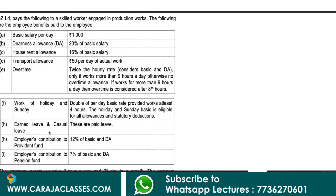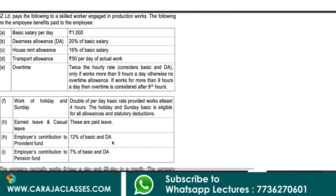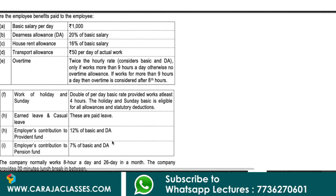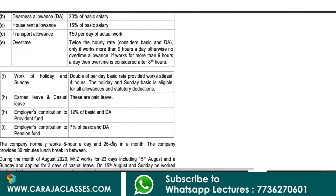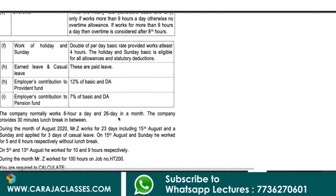Earned leave and casual leave are both paid leaves. Employee's contribution to provident fund is 12% of basic and DA. Employee's contribution to pension fund is 7% of basic and DA.